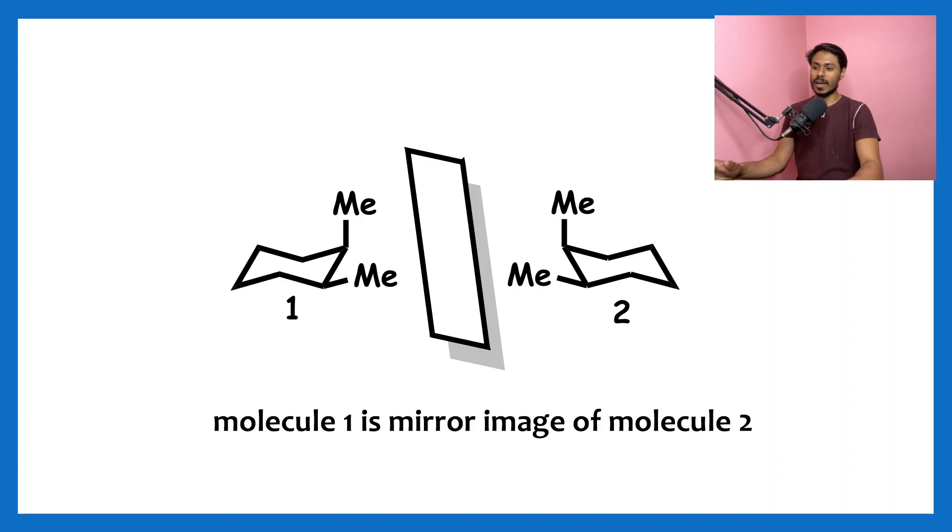Molecule one is the enantiomer of its flipped version, and that's why this flipping occurs at room temperature very rapidly. You will get a 50:50 mixture of these two, and that means the optical activity of molecule one is totally cancelled by that of molecule two, because molecule two will show...